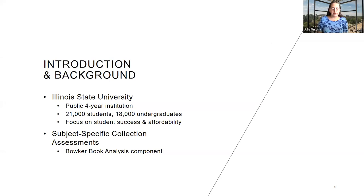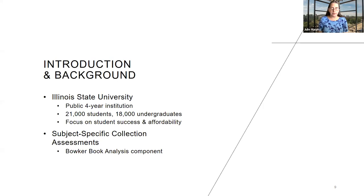I wanted to start with a little bit of context about our institution and how we came to use Resources for College Libraries to assess our collections. Rachel and I are both from Illinois State University, which is a public four-year R2 institution located in Normal, Illinois. Milner Library is the only library for the campus of about 21,000 students, 18,000 of which are undergraduates. Because we are so undergraduate-focused, student success has been a top priority on our campus, and internal data frequently cites textbook affordability as a key challenge. My title at Milner is collection assessment librarian, and I've been using Resources for College Libraries as a tool for collection assessment for many years. One of my primary activities is conducting annual in-depth collection assessments of specific subject areas on a rotating basis, and one component of those has been the Bowker Book Analysis System.